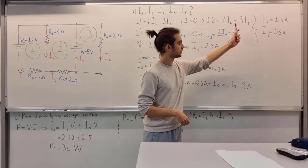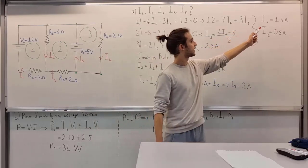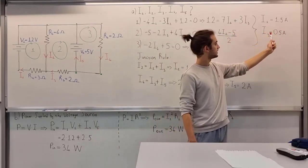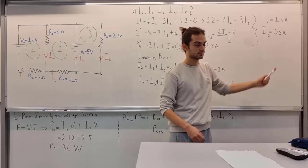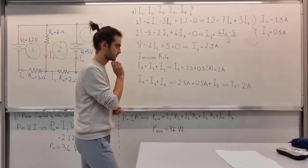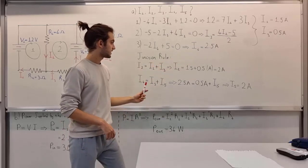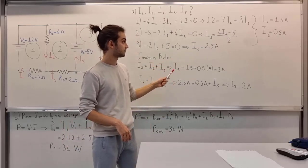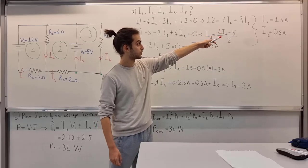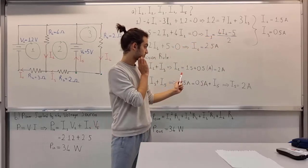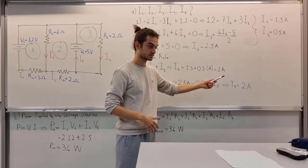Solving these two equations, you get I1 equals 1.5A, I3 equals 0.5A. We have I4, and as you see, we have I1 and I3 now from those equations. We can also get a value for I2, that is 2 amperes.